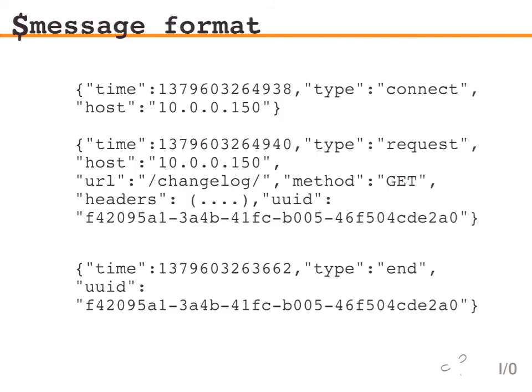Here's the message format — what the proxy passes down to the aggregator. We have a timestamp in milliseconds, an event type, and an incoming host. Once we get an actual request, we send a request event and assign a UUID to it. That UUID lets us correlate events back to their end time. We generate that random UUID, and the next event type is an end event — the delta between those two times tells you how long that event took.